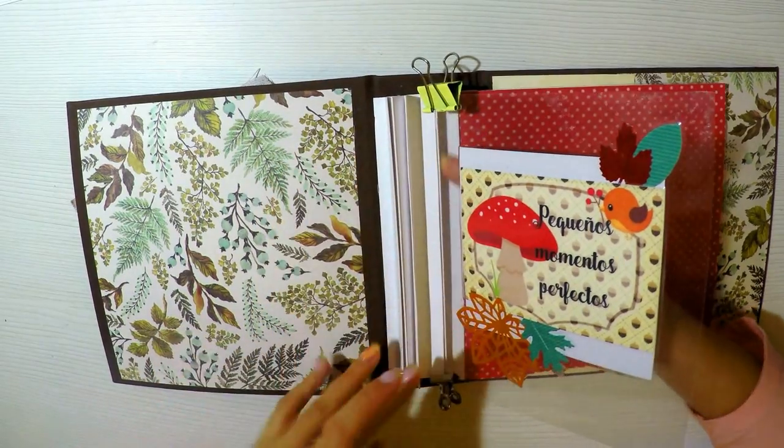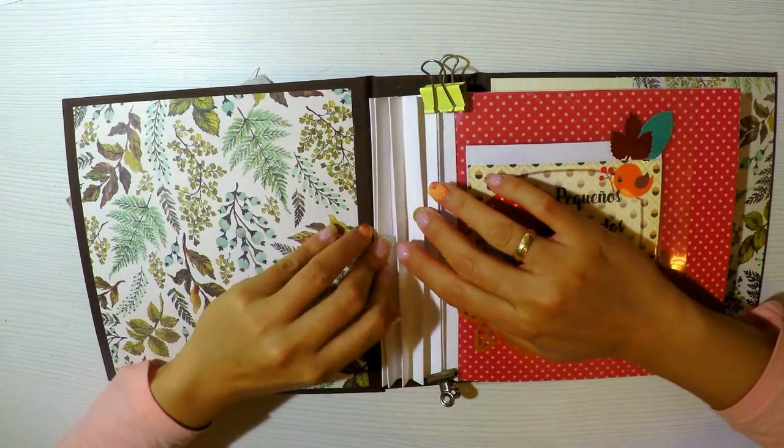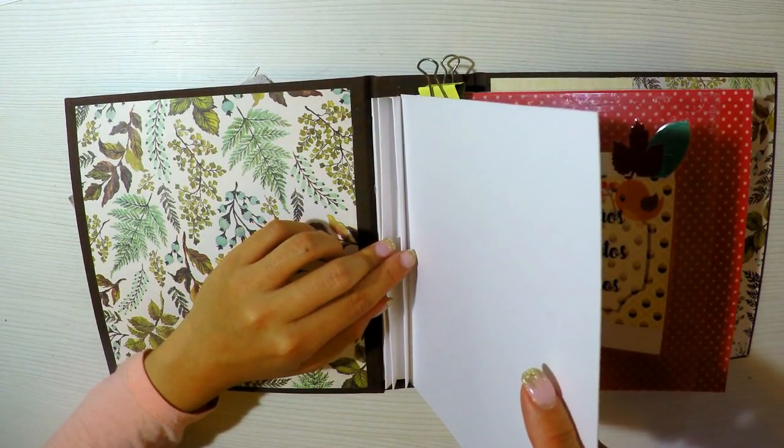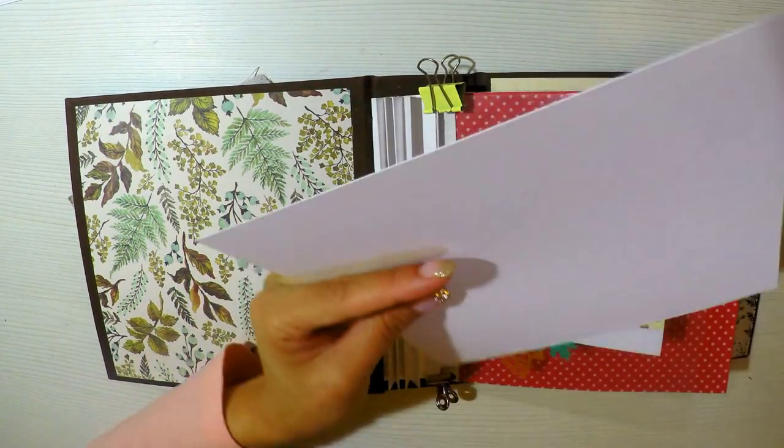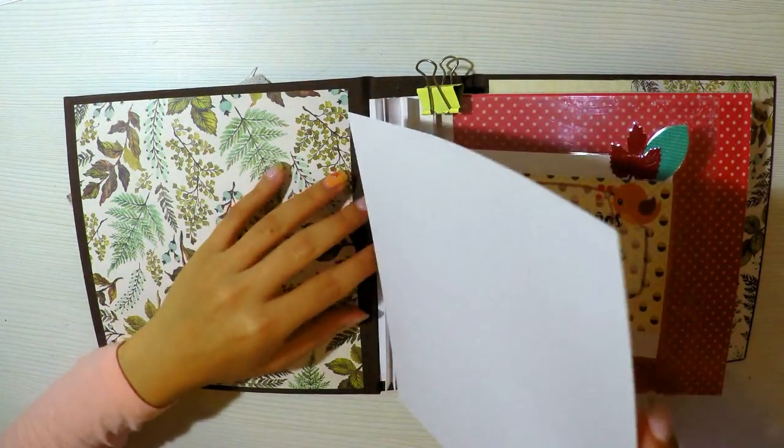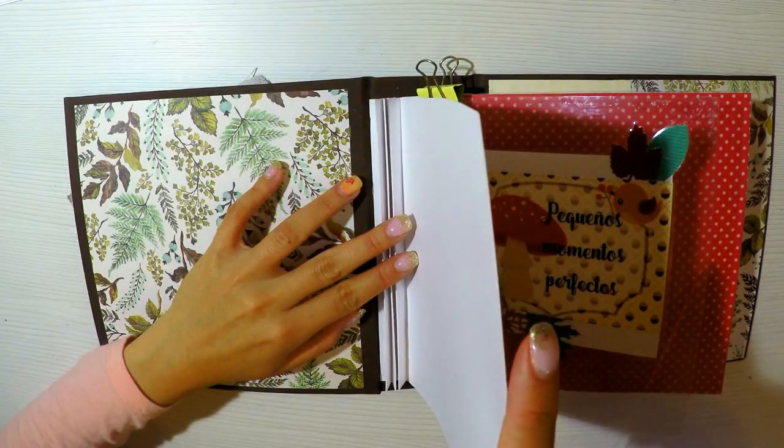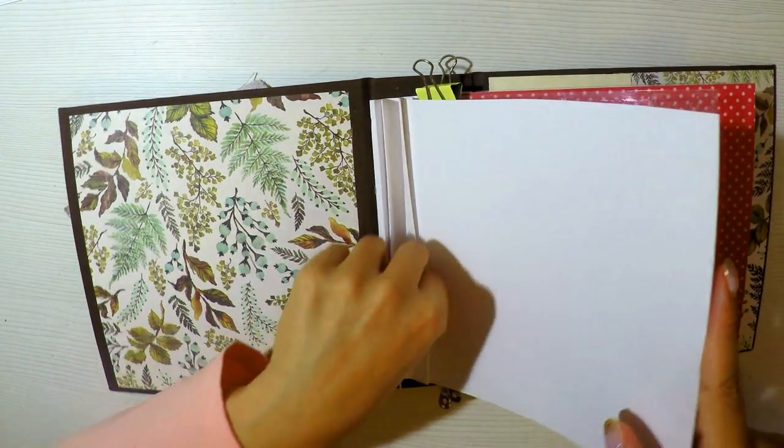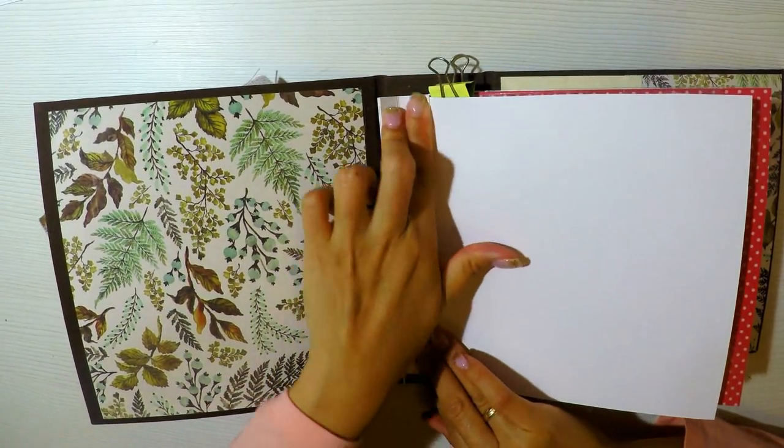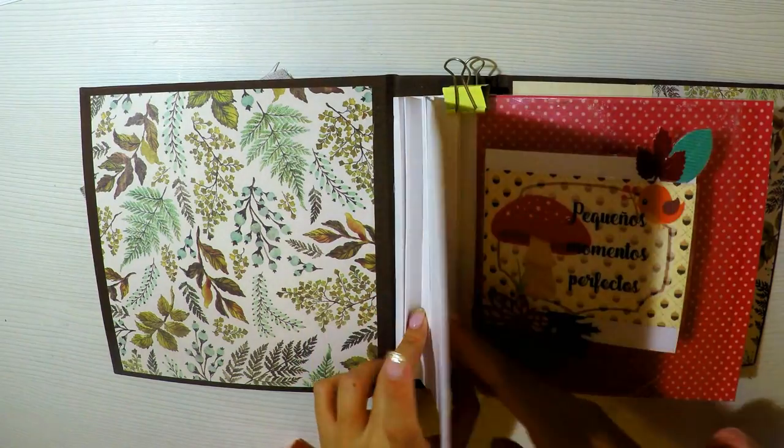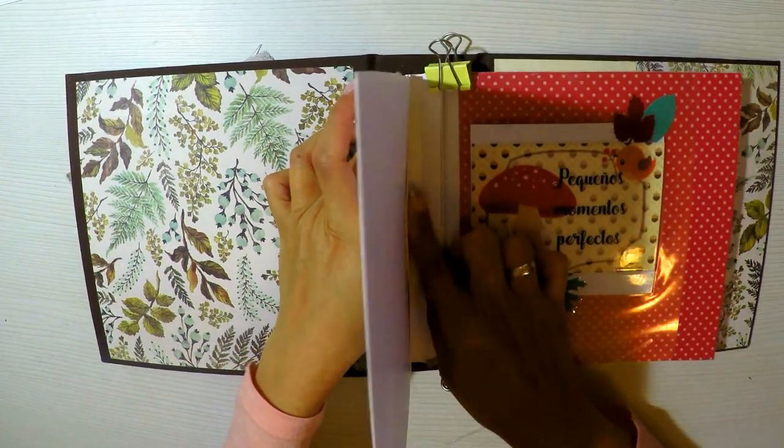La siguiente va a ser de hoja de papel. Voy a hacer una de hoja de papel y una de hoja transparente. En esta hoja de papel es donde voy a agregar todos mis desplegables y todos mis abanicos y todos mis acordeones para que este álbum sea súper grande. A este álbum le caben aproximadamente unas 50 a 60 fotos aunque parezca mentira que va a ser muy chico. Va a entrar un montón de fotos porque ya van a ver lo amplio que lo vamos a hacer.